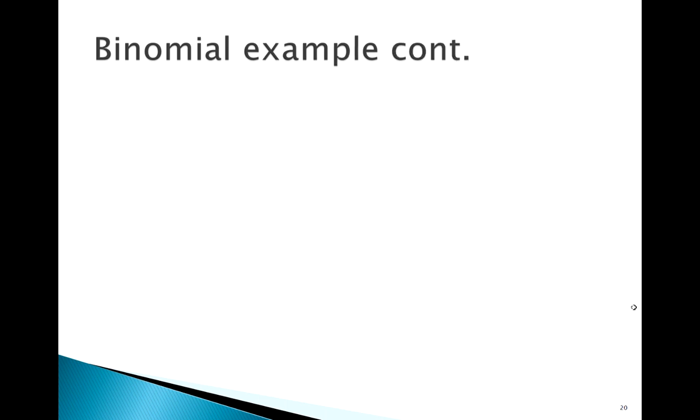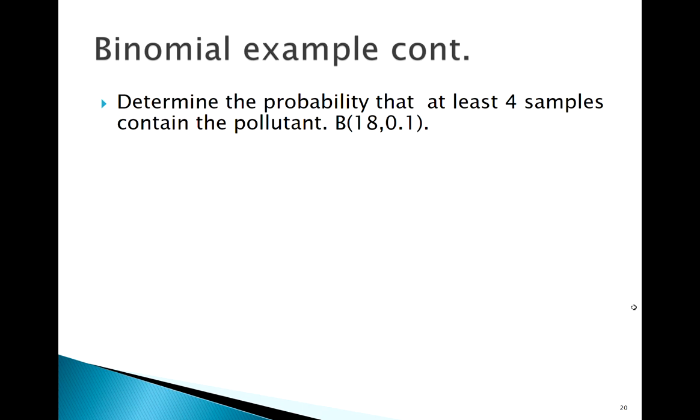Alright, so let's keep going with this example. Say we want a cumulative probability—at least four samples contain the pollutant. Okay, so I can use what I know about our probability rules. So at least 4 means X greater than or equal to 4. Alright, so now that means 4, 5, 6, 7, 8, all the way up through 18. So one way you could do it is plug into your formula a whole bunch of times. Now I probably wouldn't want to do that.